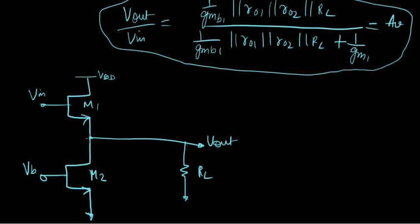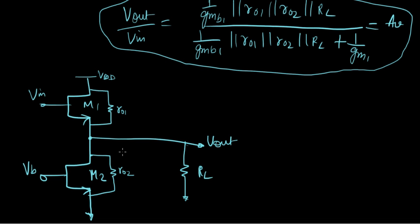In our previous lectures we spoke about the resistance seen at the output node. Let's see what all is connected there. Since we have channel length modulation, you're going to have ro1 here and ro2 here. We have ro1, we have ro2, we have RL, and we need to account for 1/gm and 1/gmb for both transistors.